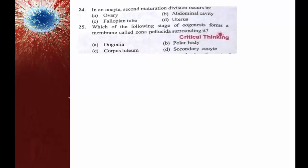In oogenesis, where does the second maturation division occur? In both oogenesis and spermatogenesis, the phase of maturation is characterized by meiosis.